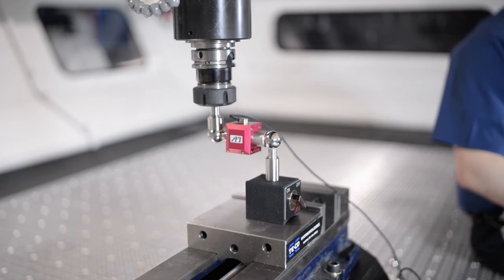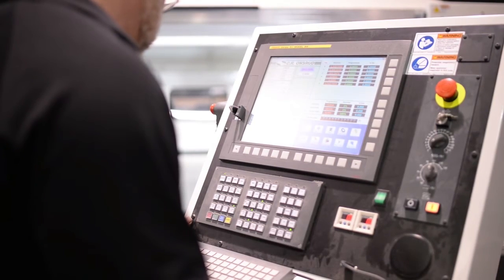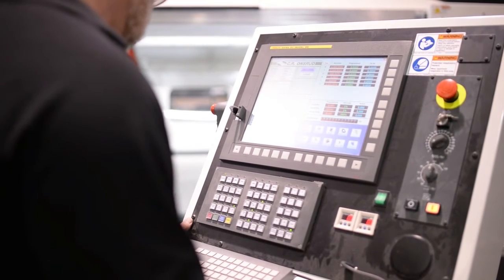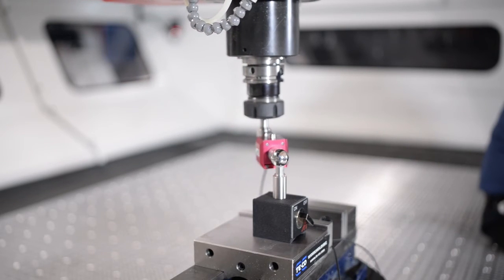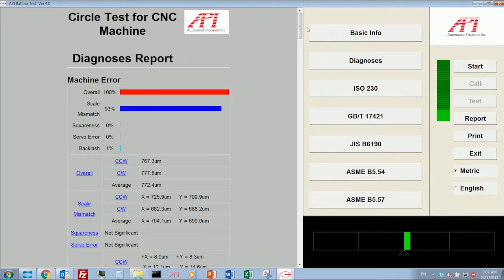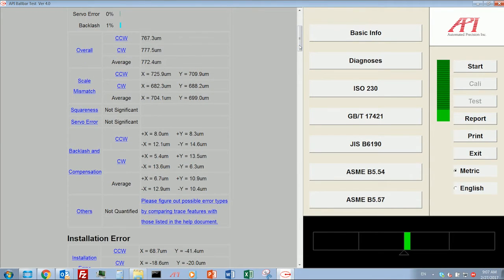Lastly, place the ball bar between the two pivots and connect it to your computer. At this point, the machine should already have the desired program loaded on it and be set to zero. Once you're ready, execute the program path and the results should be captured.